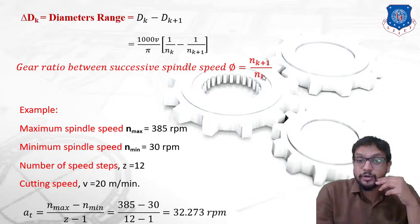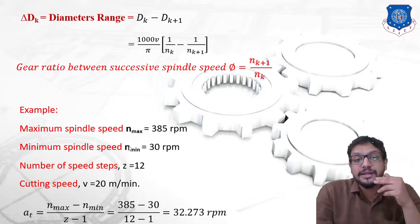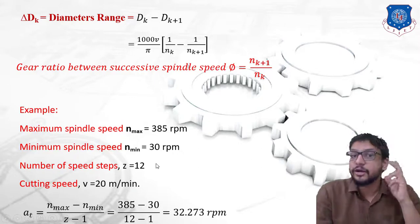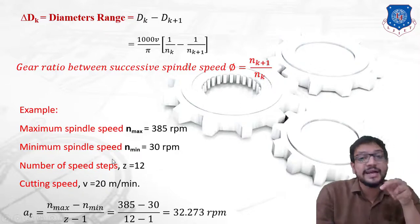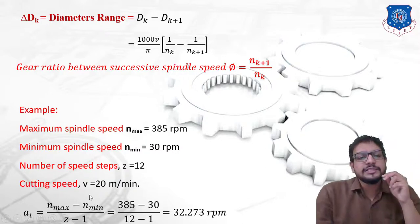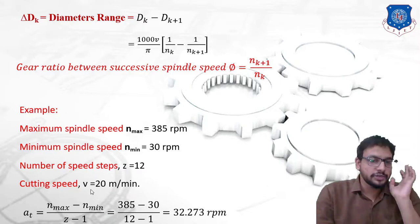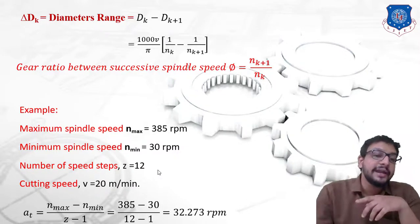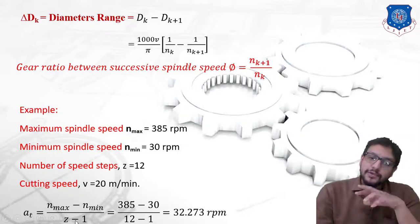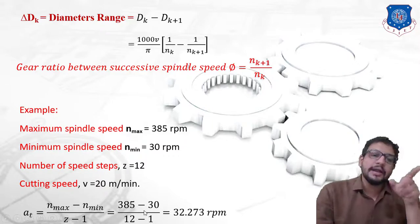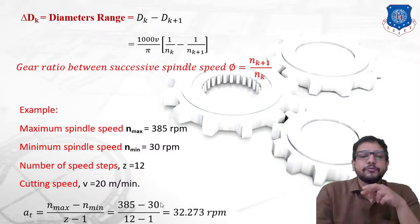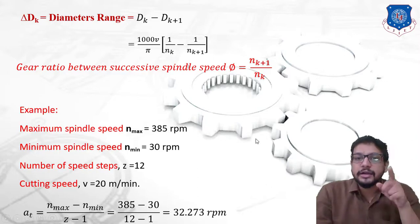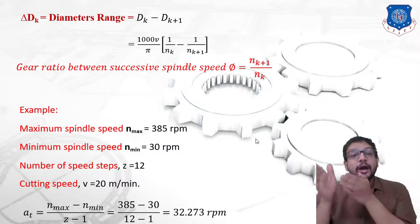Let's take a numerical example. Maximum spindle speed n_max = 385 rpm, minimum spindle speed n_min = 30 rpm, number of speed steps z = 12 (a 12-speed gearbox), and cutting speed v = 20 m/min. First, we determine the constant 'at': at = (n_max − n_min) / (z − 1) = (385 − 30) / (12 − 1) = 32.273 rpm. Using this constant, we can now determine all speed ranges n1 through n12.